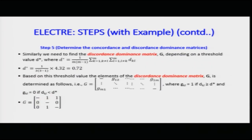Similarly for discordant values, we find the discordance threshold D* using the same formula — summing all d_kL values across all criteria and dividing by m times (m minus 1). D* comes out to be 0.75. I formulate the discordance dominance matrix G based on whether values cross threshold D*, exactly as C* was used for F.